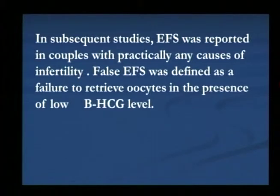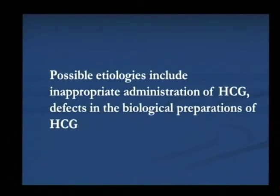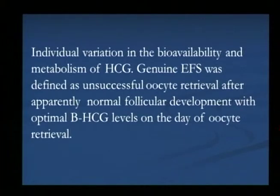This condition was initially described as a failure to retrieve oocytes in the presence of a low beta-HCG level. Where you don't get oocytes from the first hour, you are asked to stop the procedure, check the beta-HCG level, and redo at a later stage. Possible etiologies included inappropriate administration of HCG by incompetent staff, defects in the biological preparation of HCG, batch-to-batch variability, and individual variation in the bioavailability and metabolism of HCG.